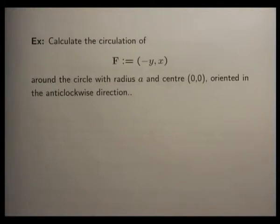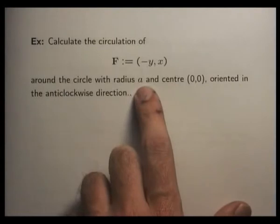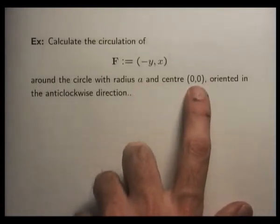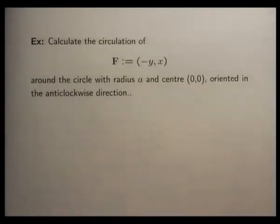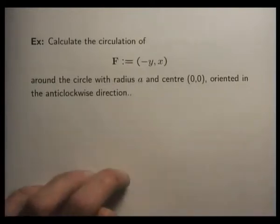Calculate the circulation of this vector field F := (-y, x) around the circle with radius a and centre at the origin. And we're going to orient it in an anti-clockwise direction. So we know which way the unit tangent vector is pointing.